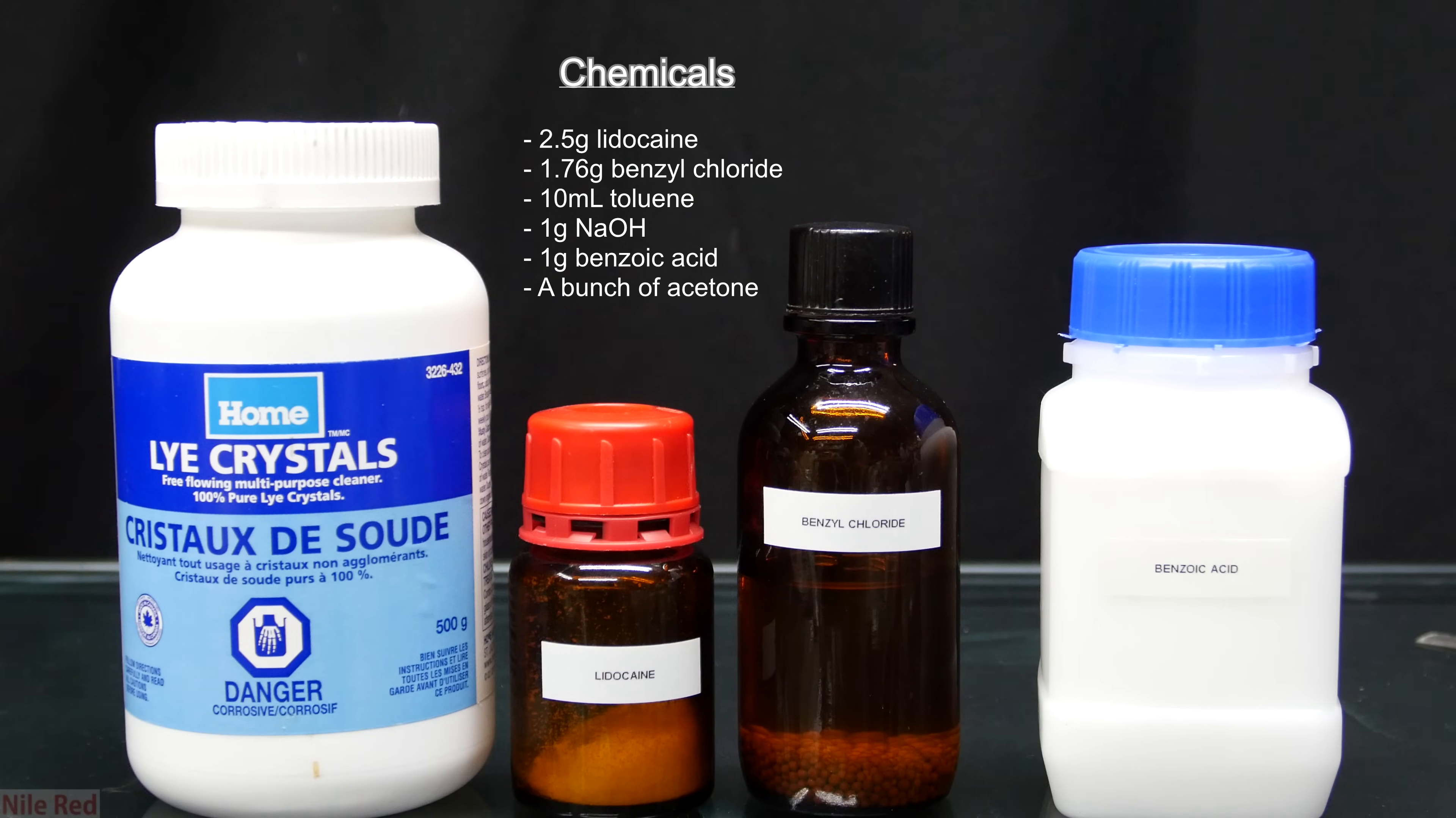Anyway, we're going to be making denatonium benzoate from three things that we got from previous videos: benzoic acid, lidocaine, and benzyl chloride. I tried to lay out everything that we used here, but as usual I forgot a couple things. I used 2.5 grams of lidocaine, 1.76 grams of benzyl chloride, about 10 milliliters of toluene, 1 gram of sodium hydroxide, 1 gram of benzoic acid, and a copious amount of acetone.